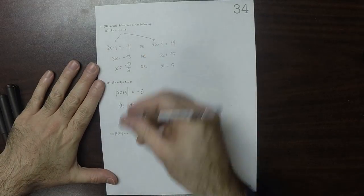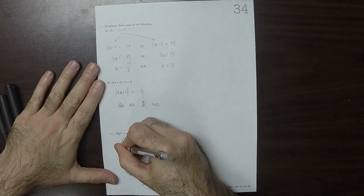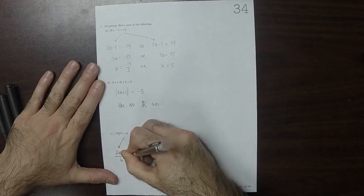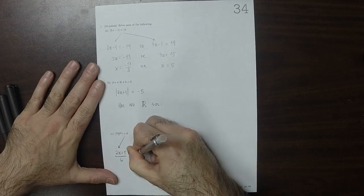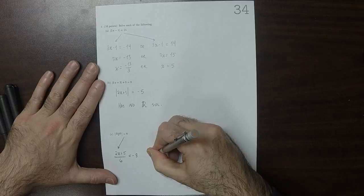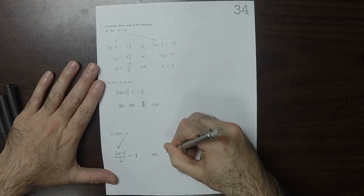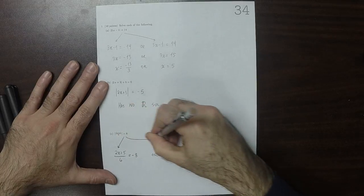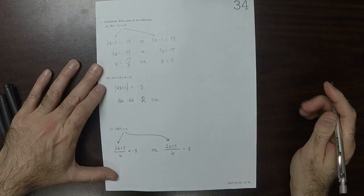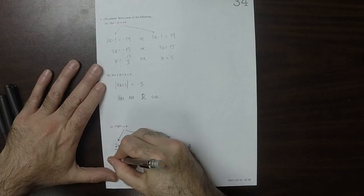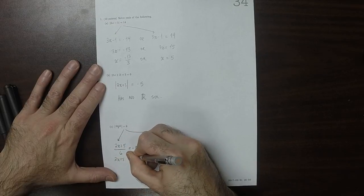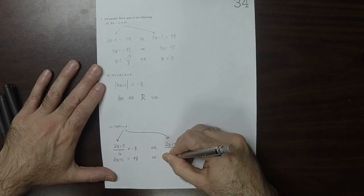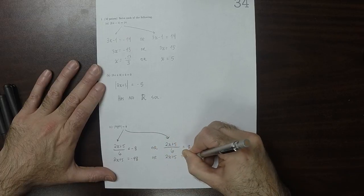Similarly, to part a, this one splits into 2x plus 5 divided by 6 could be negative 8, or 2x plus 5 divided by 6 could be positive 8. So, 2x plus 5 could be negative 48, or 2x plus 5 is 48.